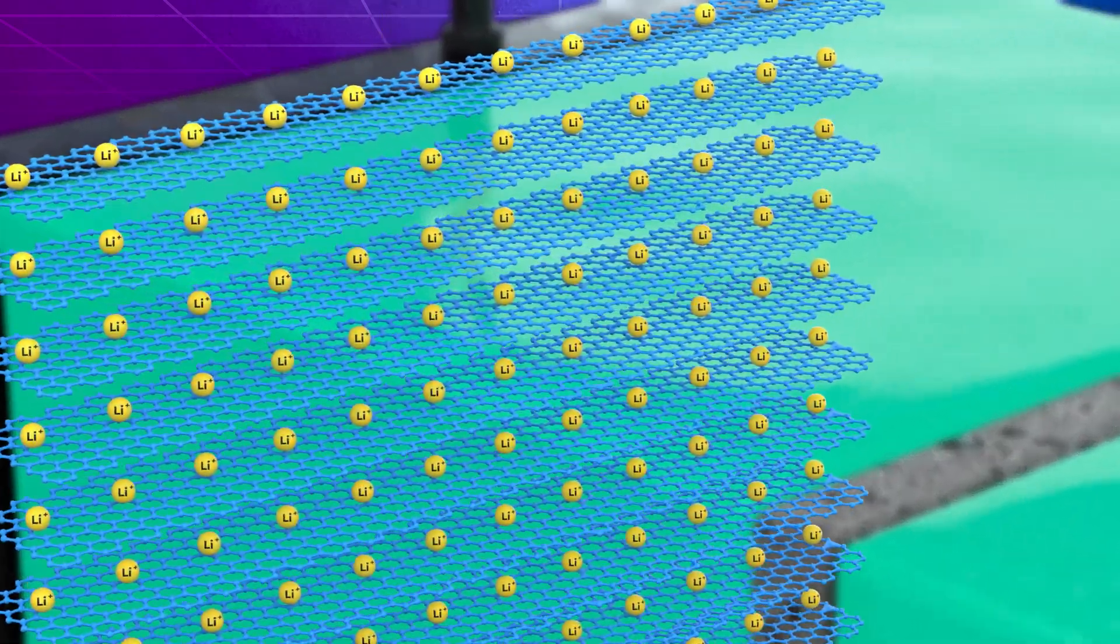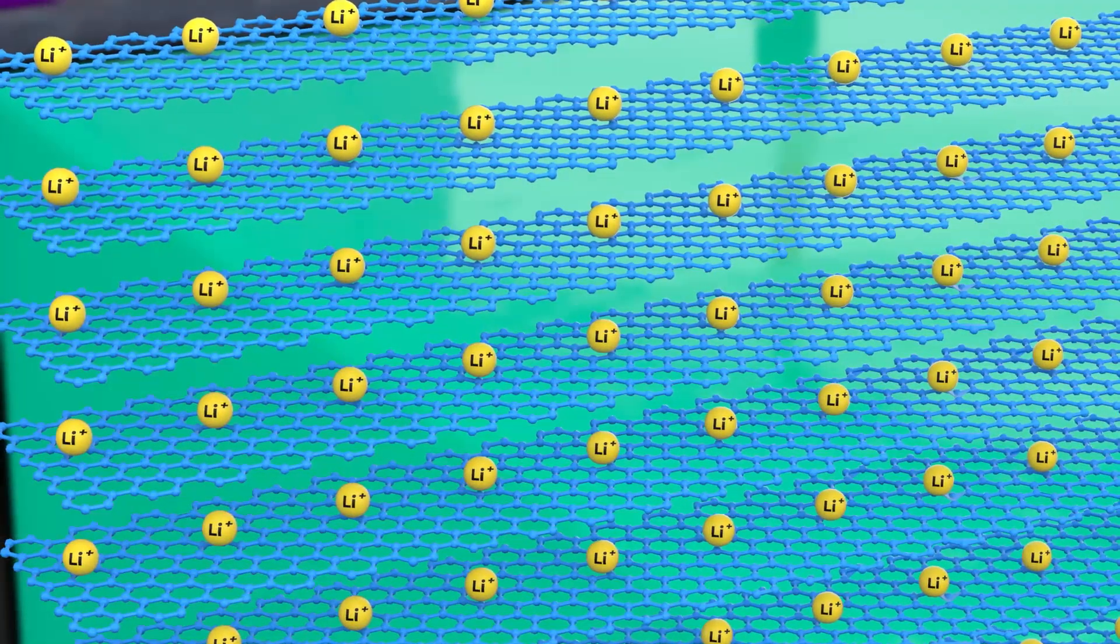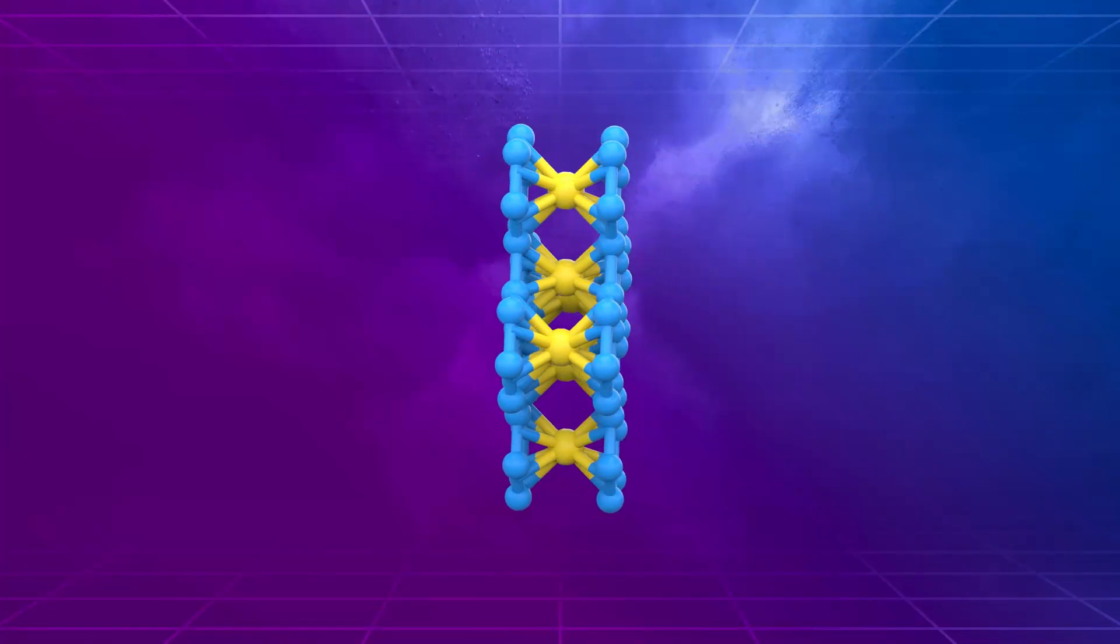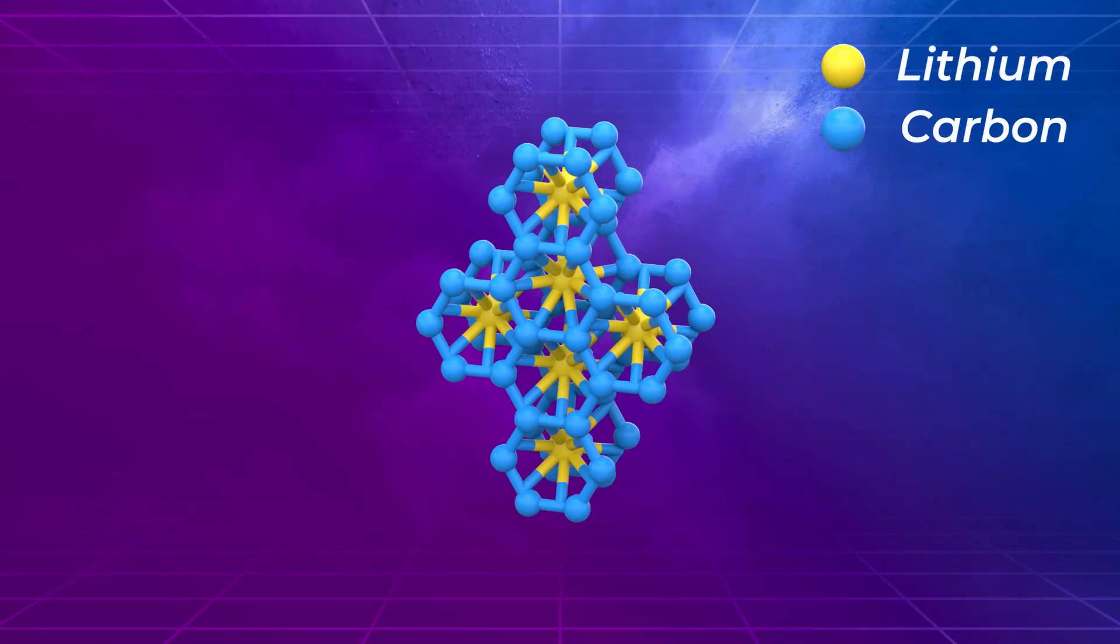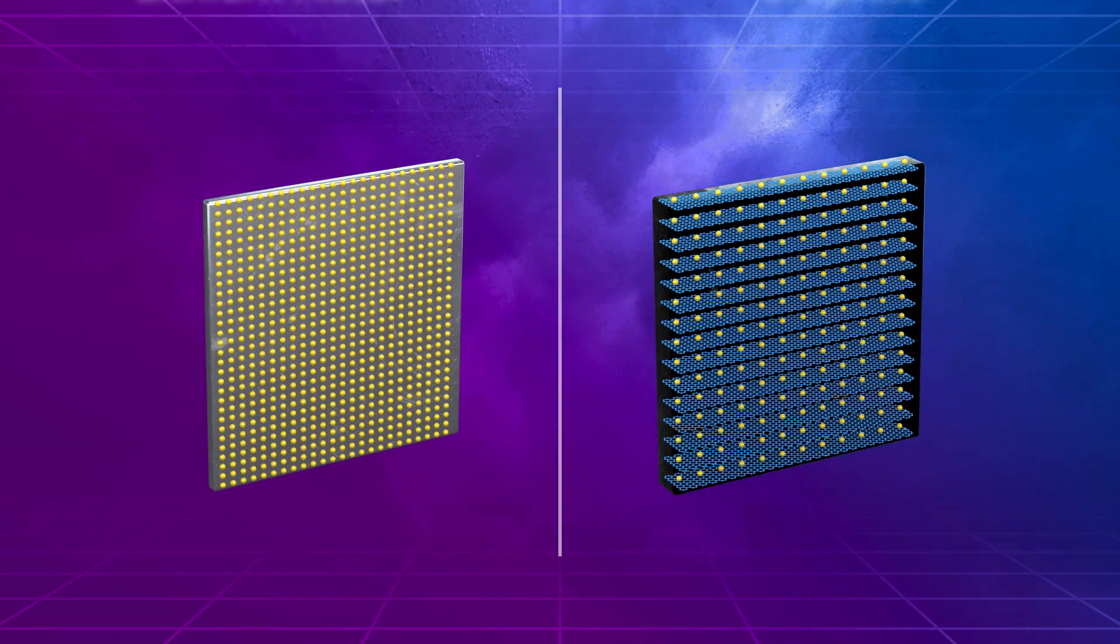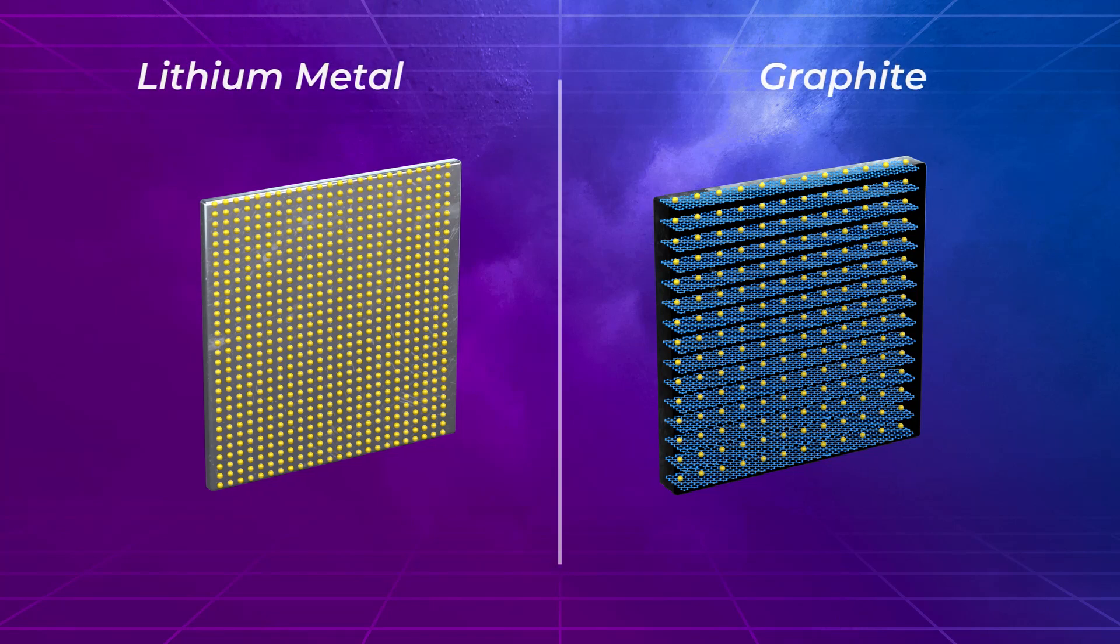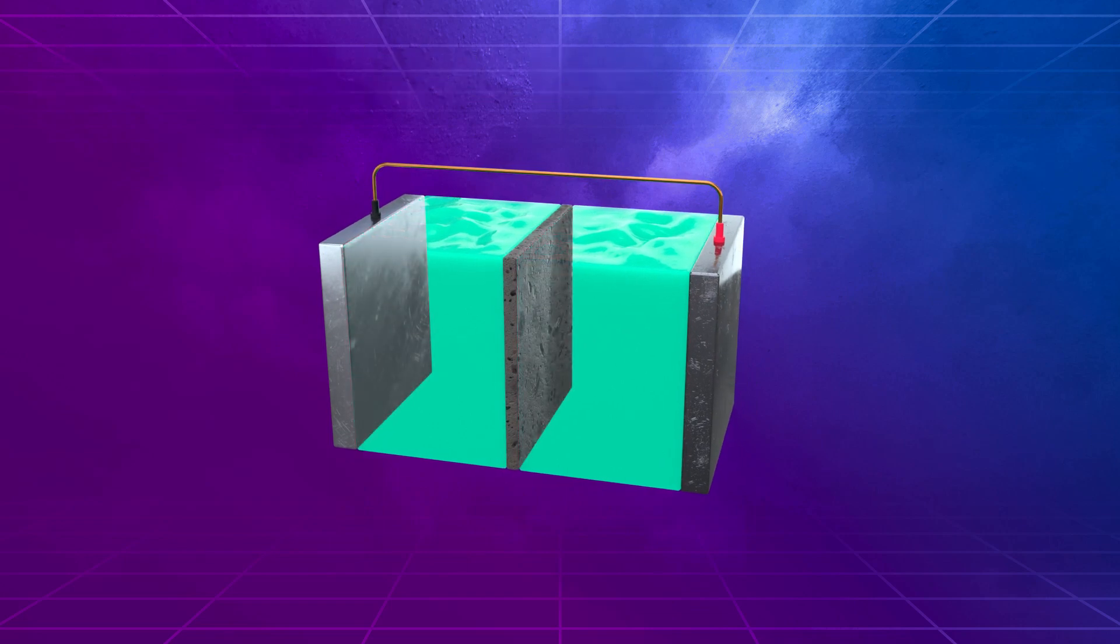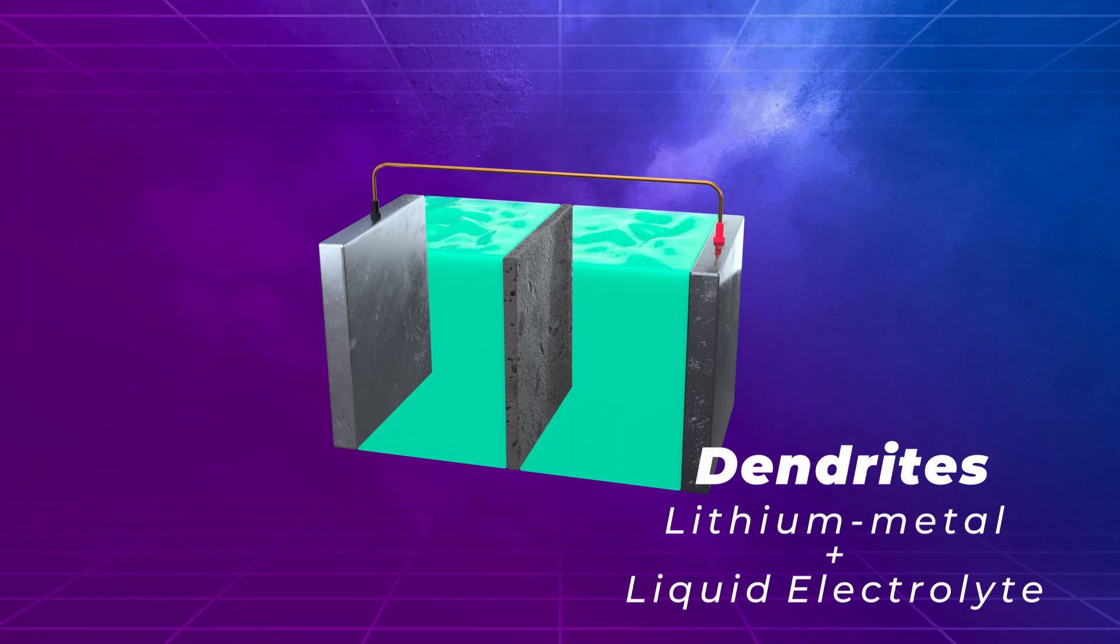Traditional lithium-ion cells use a hosted anode in which the host material provides a structure to hold the lithium. For example, in the case of carbon, it takes six carbon atoms to hold one lithium atom. If, however, an anode of pure metallic lithium were used, all the carbon in the anode could be eliminated and the energy could be stored in a much smaller volume.